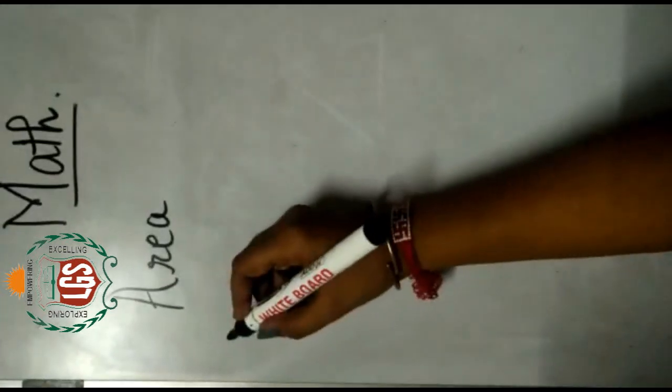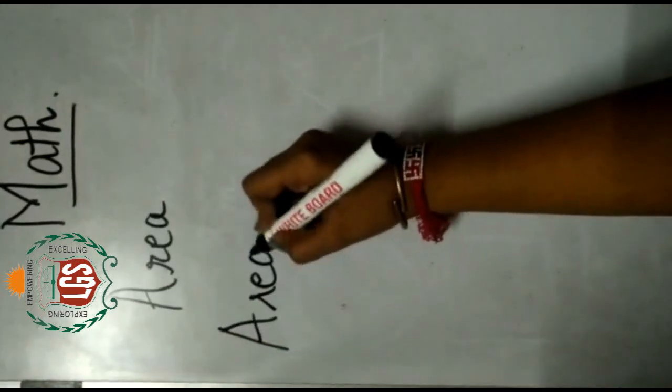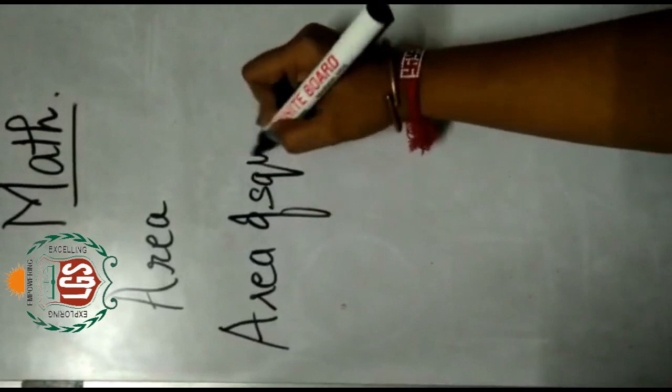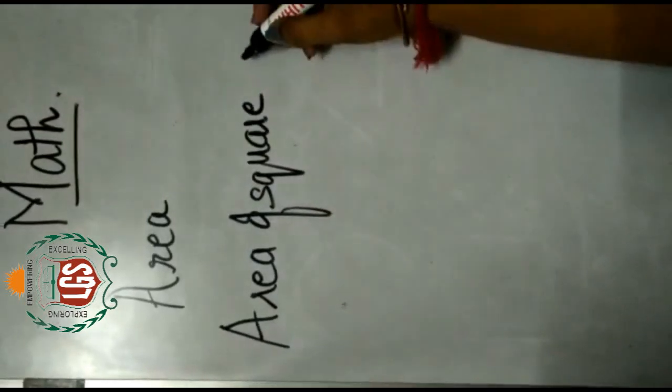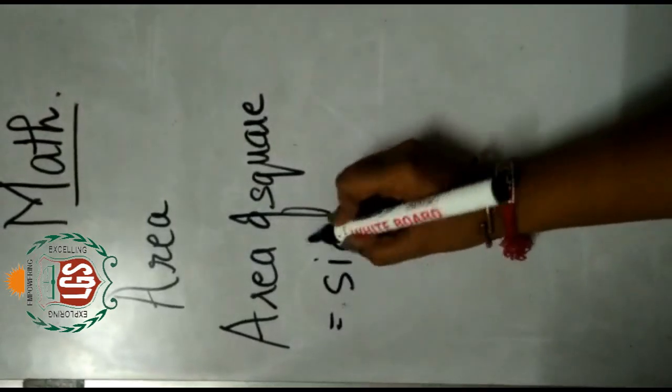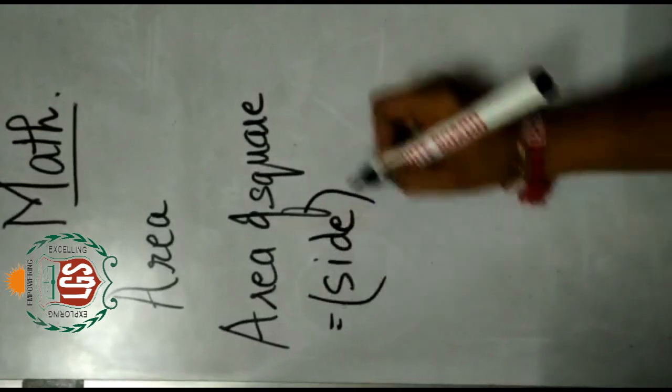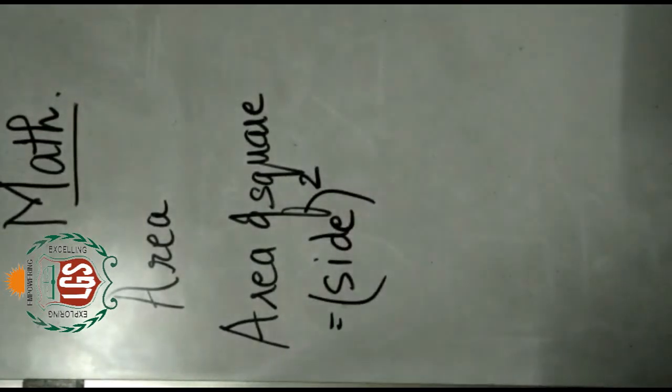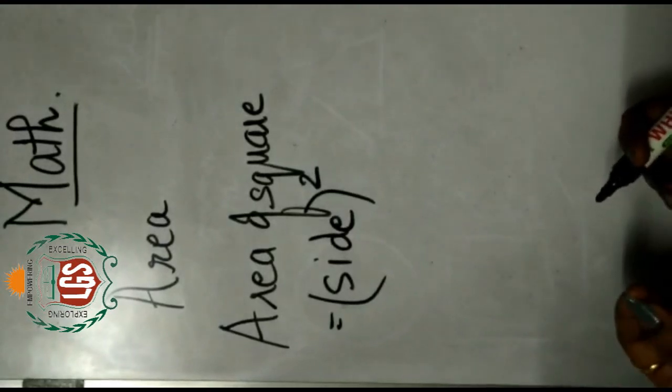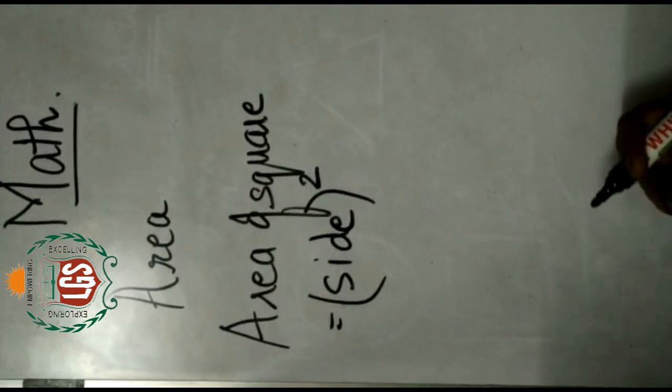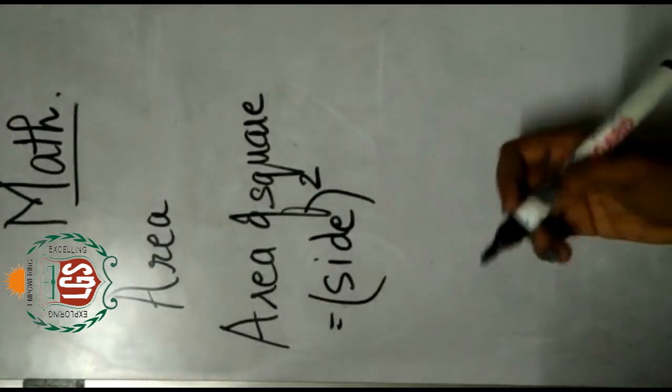In case when you have to find the area of a square you require only one thing and that is side. Because the formula for area of a square is side square. We know that all the sides of a square are equal. Which means if one side of the square is 4 cm, all the sides are going to be 4 cm.